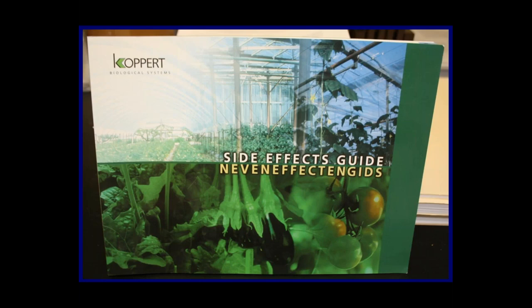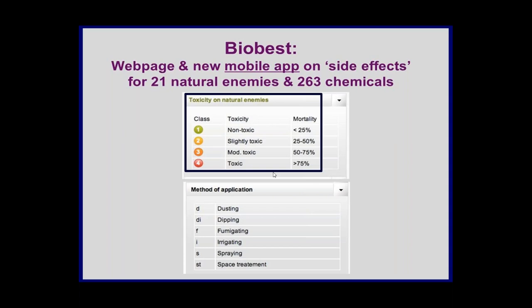There are guides discussing side effects, such as the one by Koppert. It uses a toxicity rating from one to four, developed by the International Organization of Biological Control: one meaning non-toxic (less than 25% direct mortality) up to four meaning toxic (over 75% mortality). When you open the guide, you'll find listings of natural enemies and pesticides — many rated four (over 75% mortality), but also many with no information at all, which limits the guide's value.